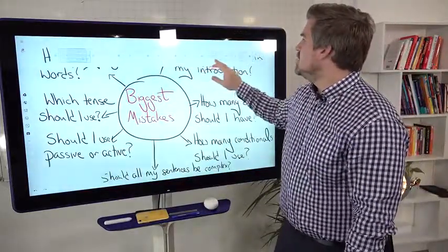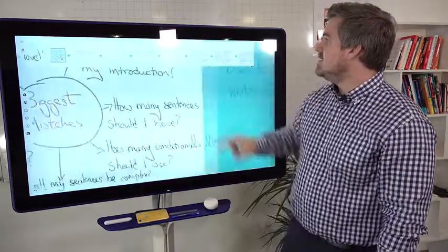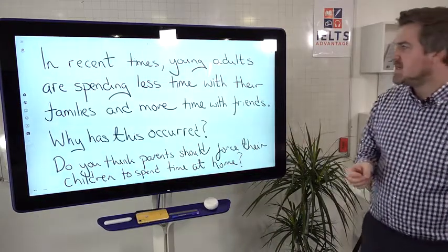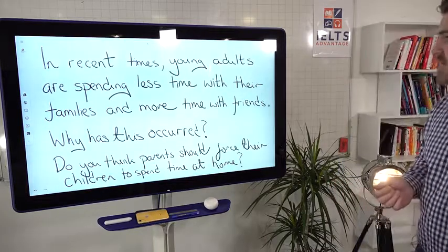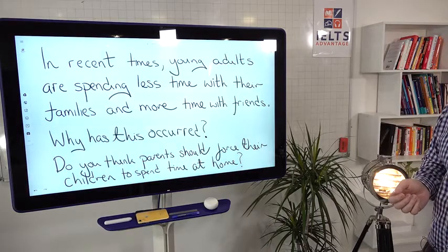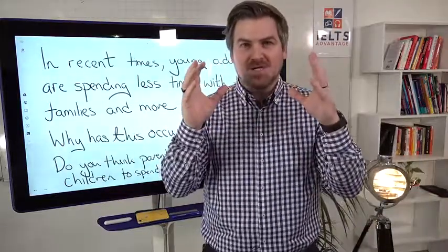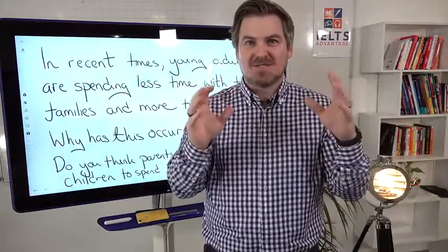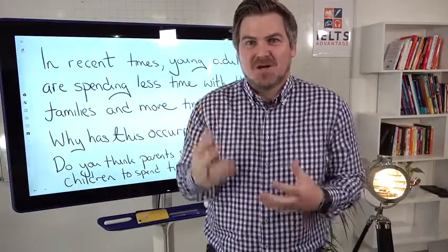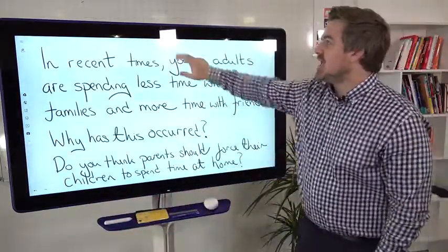Let's have a look at a structure that will help us understand it. First we need a question. Have a look at this question: In recent times, young adults are spending less time with their families and more time with friends. Why has this occurred? Do you think parents should force their children to spend time at home? If you're looking at this question and you're thinking immediately, how many big words do I need to use and how many sentences and how many different tenses, you're not actually thinking about the question. You're not actually thinking, how can I clearly answer this question?